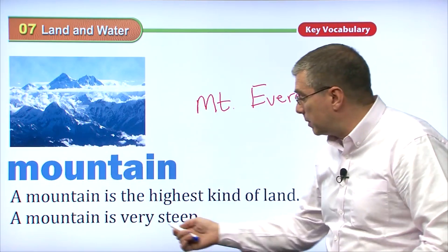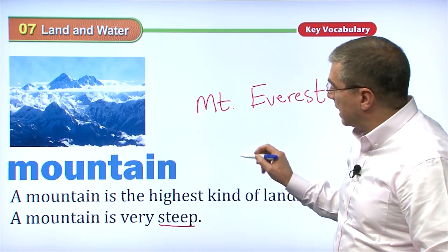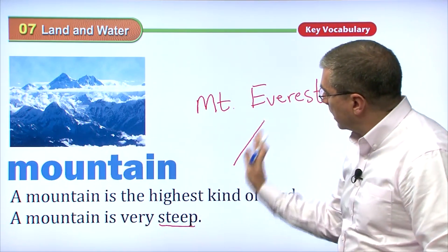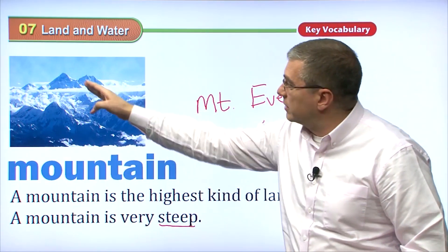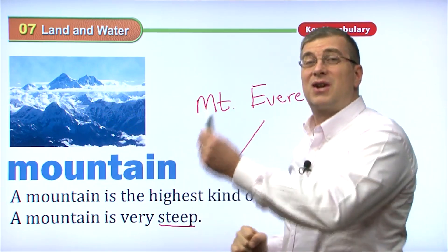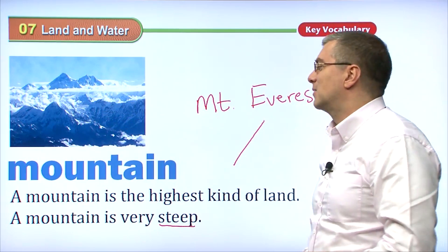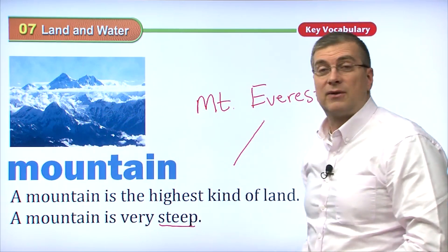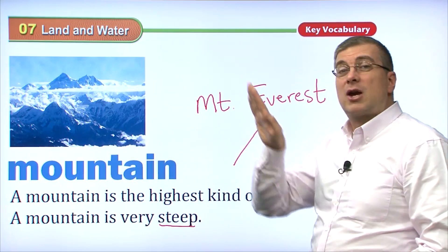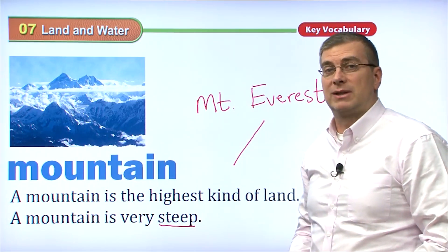A mountain is very steep. Steep is a good word — steep means it has a very strong angle going up. If you look at the mountains, they're very steep. That means it's very hard to climb them. Sometimes you have to climb them like this. The sides go up very quickly. They are steep mountains.